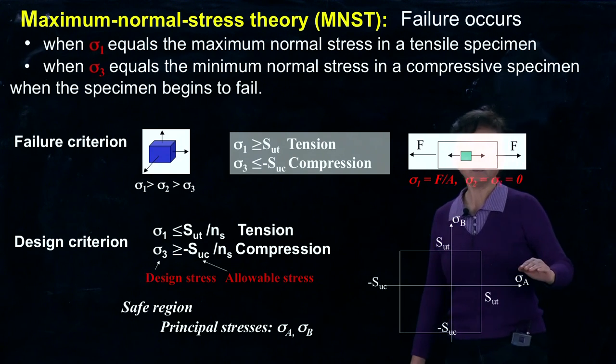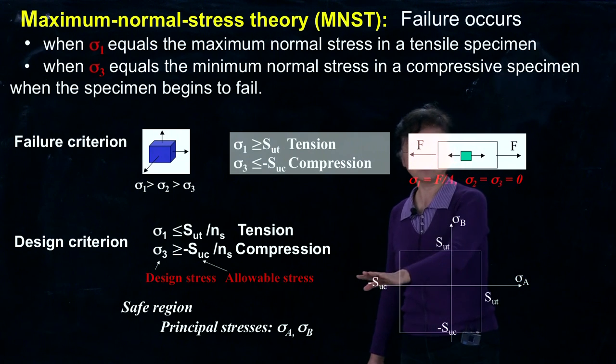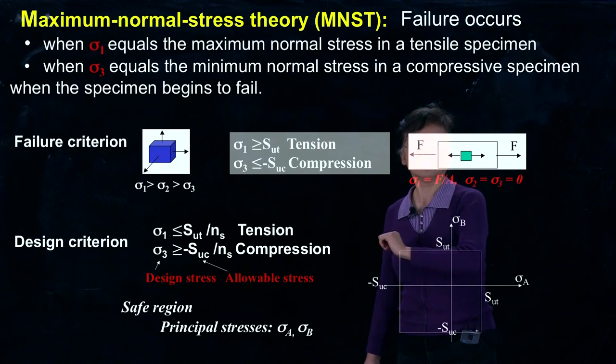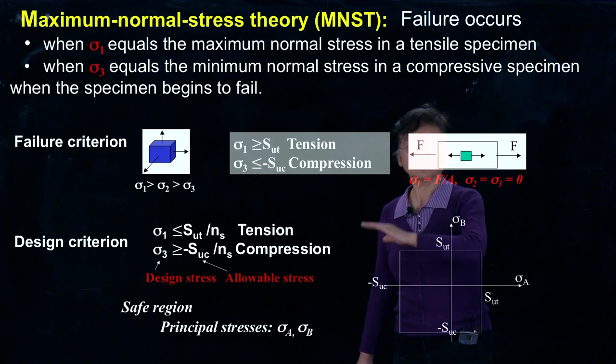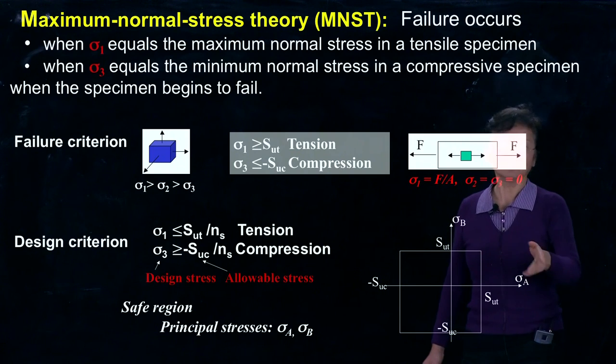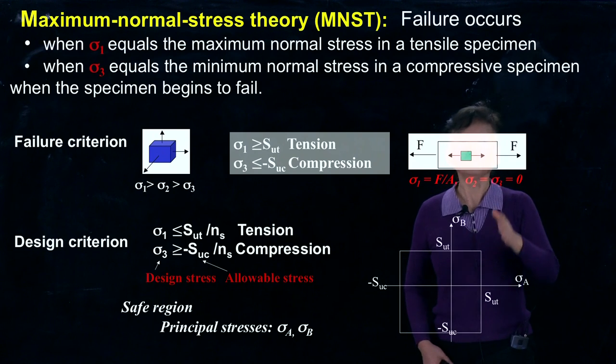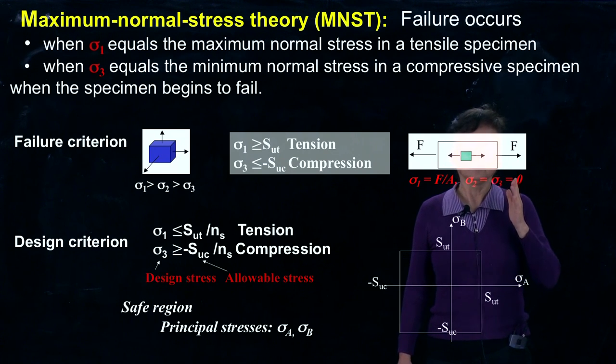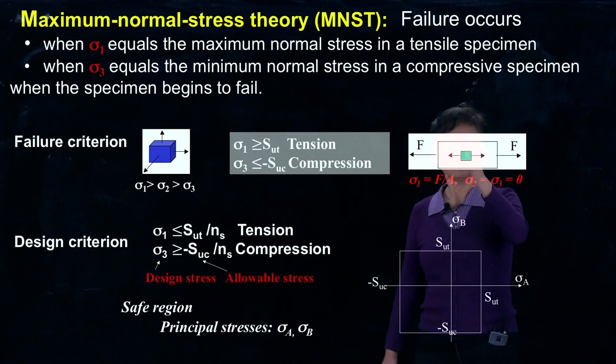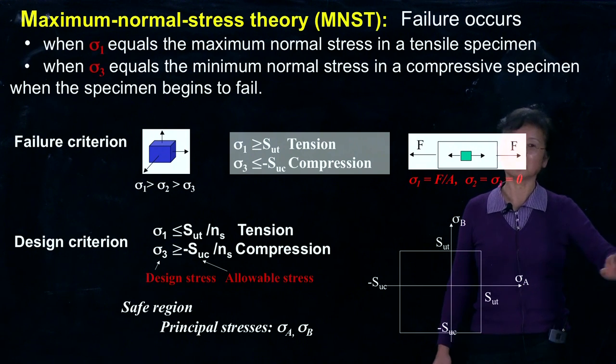σA, when negative, goes to this side. It cannot be further negative than the uniaxial compressive ultimate strength. On this side, σA cannot go beyond the uniaxial tensile ultimate strength. The same thing applies to σB.